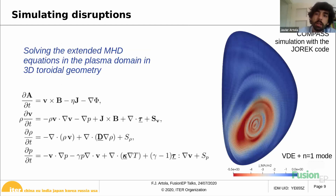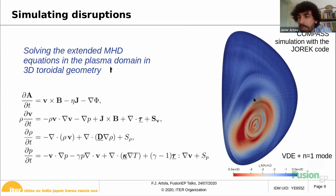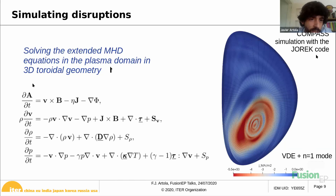How do we simulate disruptions? The approach we follow is to solve the extended MHD equations for the plasma in 3D geometry. This is an example of a COMPASS simulation with the JOREK code, which is the one I use. In this simulation, I simulate a vertical displacement event plus an N equals one mode that is unstable. For that, we create a mesh in the plasma domain and solve the typical MHD equations: conservation of mass, conservation of heat, conservation of momentum, as well as Faraday's law mixed with a generalized Ohm's law.